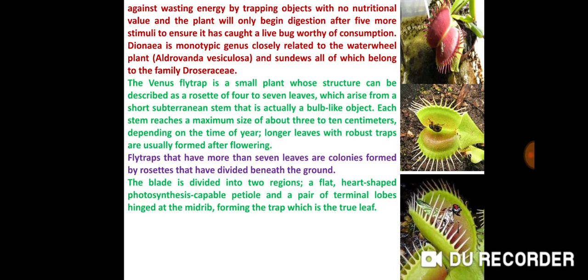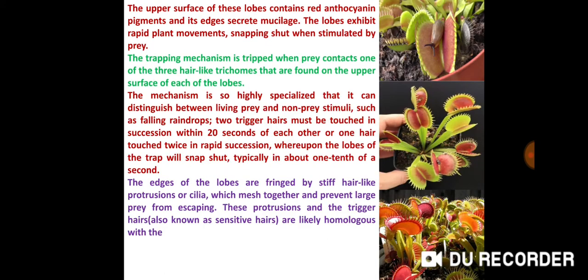The blade is divided into two regions: a flat, heart-shaped photosynthesis-capable petiole, and a pair of terminal lobes hinged at the midrib, forming the trap, which is the true leaf. The upper surface of these lobes contains red anthocyanin pigments and its edges secrete mucilage. The lobes exhibit rapid plant movements, snapping shut when stimulated by prey. The trapping mechanism is tripped when prey contacts one of the three hair-like trichomes found on the upper surface of each of the lobes. The mechanism is so highly specialized that it can distinguish between living prey and non-prey stimuli, such as falling raindrops.